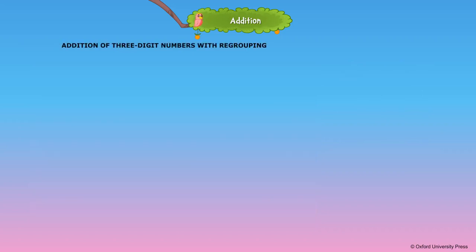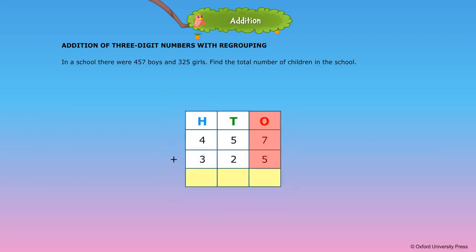Addition of 3-digit numbers with regrouping. In a school there were 457 boys and 325 girls. Find the total number of children in the school. First, add the digits in the ones place. 7 ones plus 5 ones is equal to 12 ones, or 1 ten and 2 ones. Write 2 in the ones place and carryover 1 to the tens place.